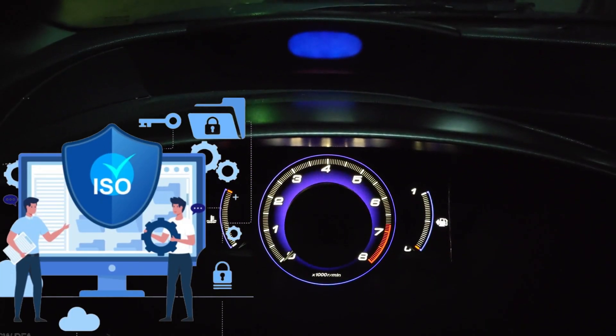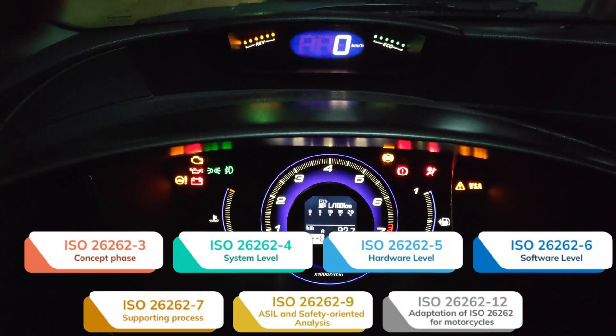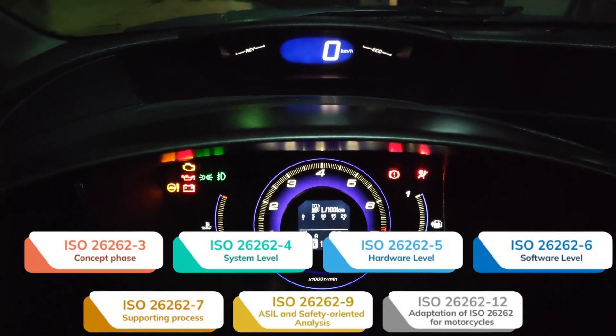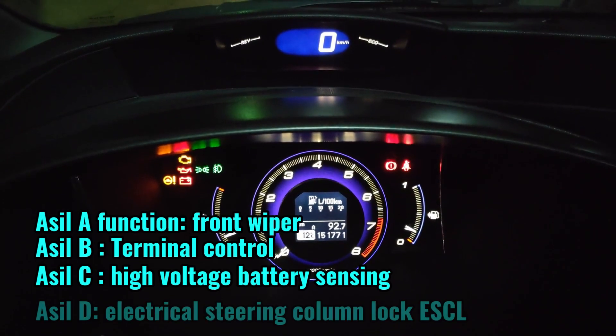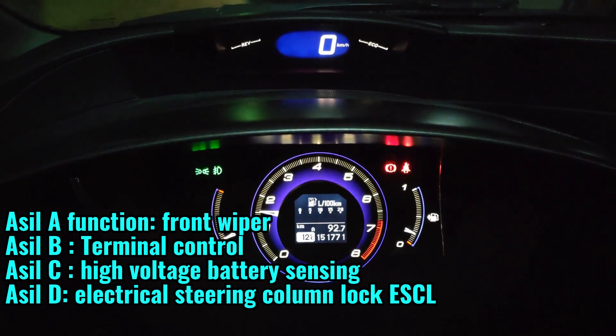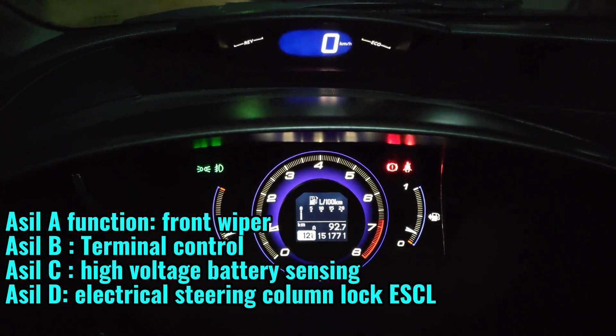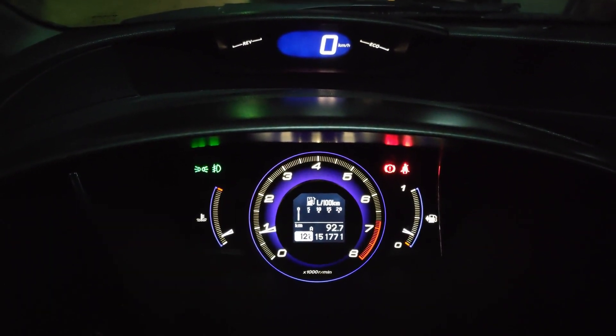ISO 26262 covers the functional safety aspects of the entire development cycle, starting from the concept phase until start of production. And it provides also an automotive-specific risk-based approach to select the risk level, or what we call ASILs. For each ASIL, there is a set of requirements that each safety-relevant system shall fulfill.